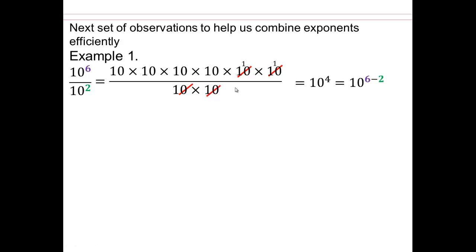How did we get the 4? We have 6 tens on the numerator and 2 tens on the bottom. So really, we eliminated the 2 from the bottom by division. When you divide a base to an exponent by the same base to a different exponent, you can subtract the exponents. That's what we're observing here.